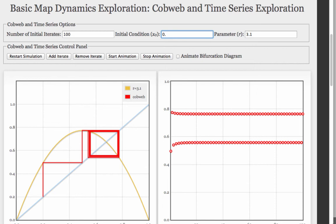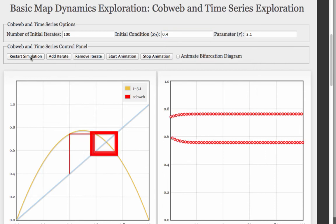If we started from a different parameter value, we would reach the same periodic orbit, just from a different direction.